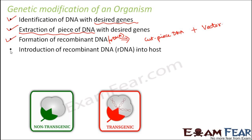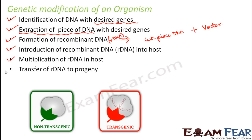Once the recombinant DNA is formed, it is introduced into the host cell. Inside the host cell, this recombinant DNA will start to produce clones — it will start to replicate — and we say that multiplication of rDNA takes place in the host. DNA polymerase helps in the process of replication. This rDNA then gets transferred to the progeny, so the organism and its progeny both get genetically modified.